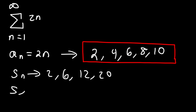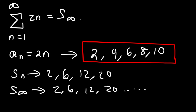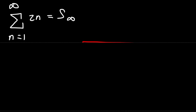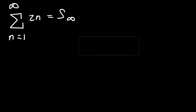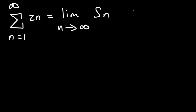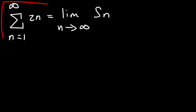If this sequence goes to infinity, it will keep going forever, and so this is termed an infinite series. s sub infinity is the sum of the first infinite terms. A more accurate way to describe this is to say it's equal to the limit as n approaches infinity of s sub n. This means we're looking for the sum of an infinite number of terms.